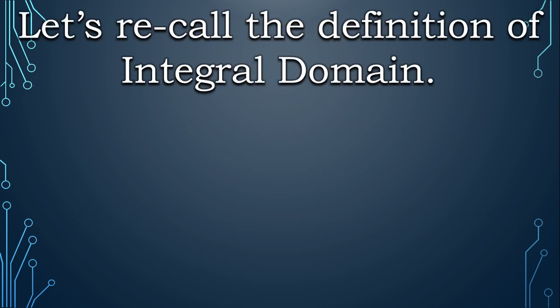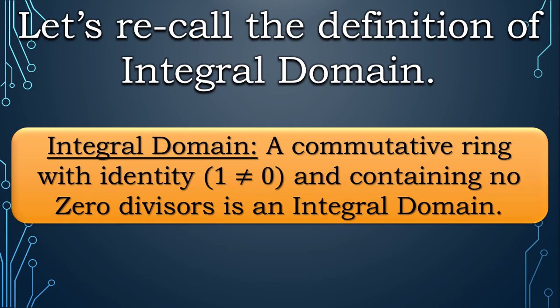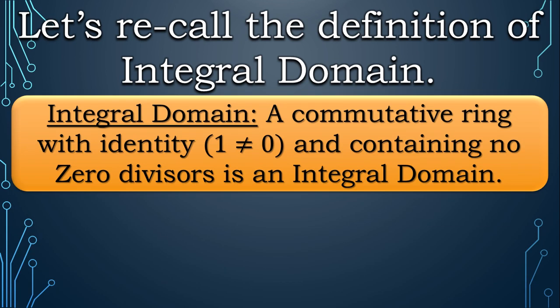But before that, let's revisit the definition of integral domain real quick. So integral domain is basically a commutative ring with identity 1 ≠ 0 and containing no zero divisors. Here, 1 ≠ 0 means that multiplicative identity 1 is different from additive identity zero. So we have two different identities in this ring.